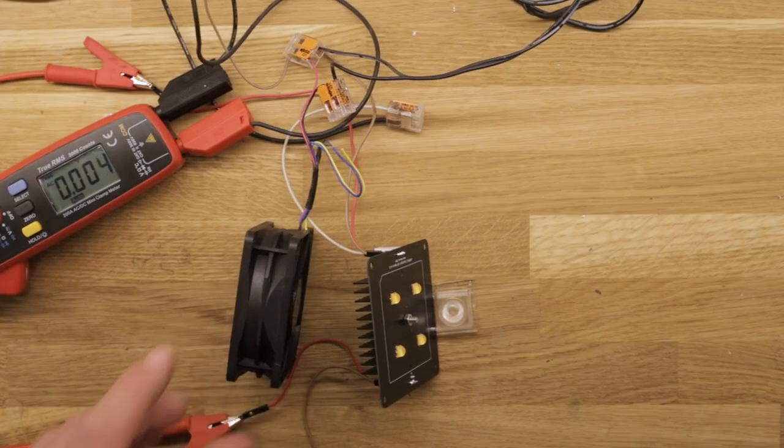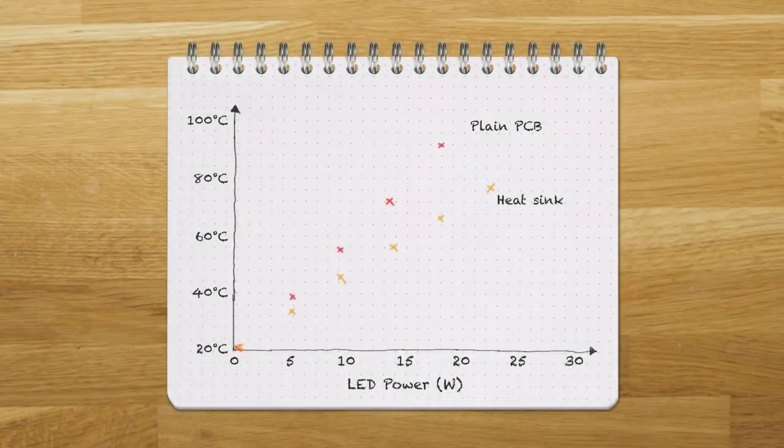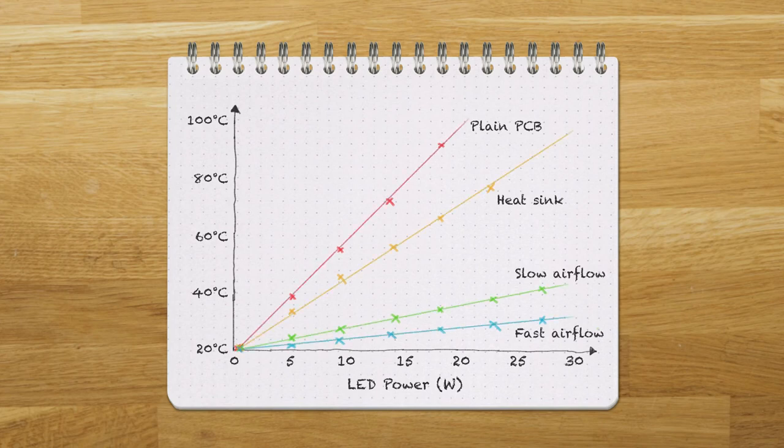To improve the cooling further active cooling can be applied by having a fan blow air through the heatsink fins. As seen in the graphs in front of us just a little airflow makes a huge difference. Ideally I'd prefer not having a fan but for now we'll keep it until the maximum LED output power has been decided.